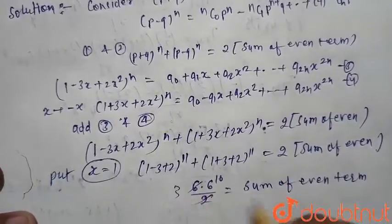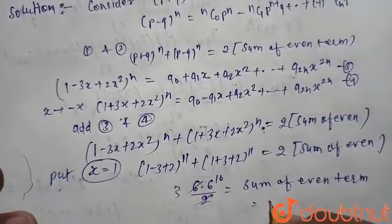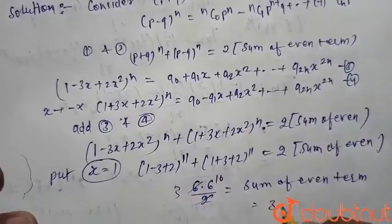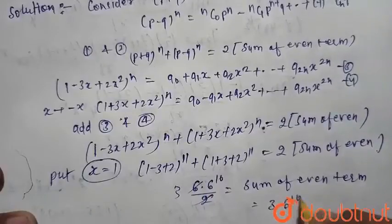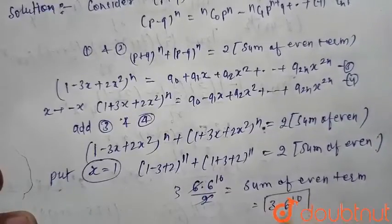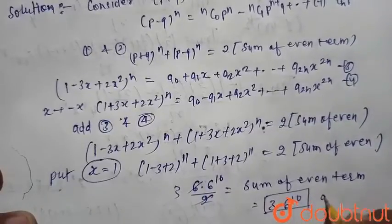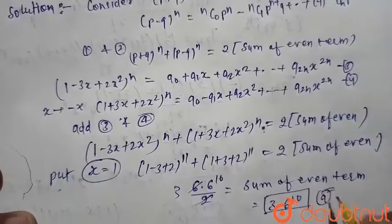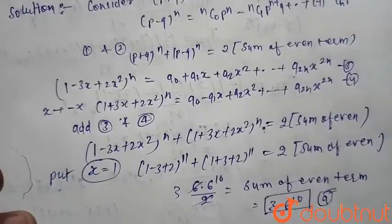Therefore, the sum of even terms equals 3 × 6^10. So option A is correct. Thank you.